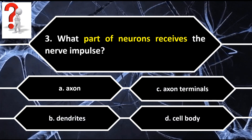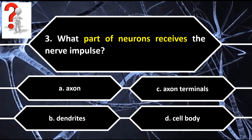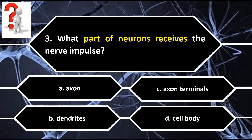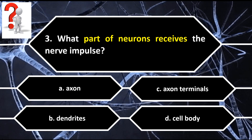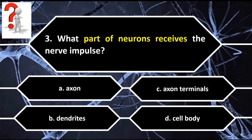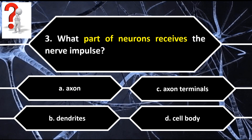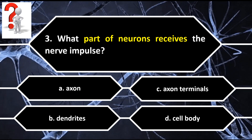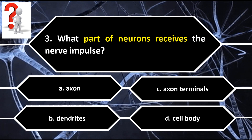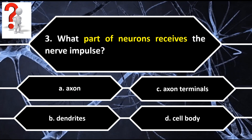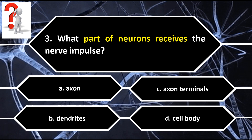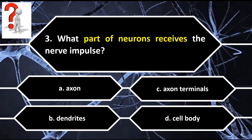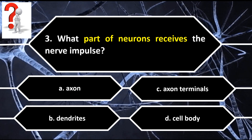Number 3. What part of neurons receives the nerve impulse? A. Axon. B. Dendrites. C. Axon terminals. D. Cell body.